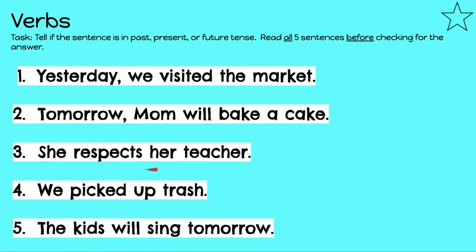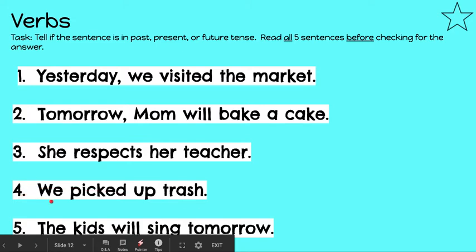Number three: She respects her teacher. What is the verb? The verb is respects. Does it have the word -ed? No. Does it have the word will in front of it? No. So is this something happening right now in the present? Yes. Respect is a present tense word, so this sentence is in the present tense. Number four: We picked up trash. Picked up is something you can do. Does it have an -ed? It does. So when it has -ed, it's in the past. This sentence is being spoken in the past tense.